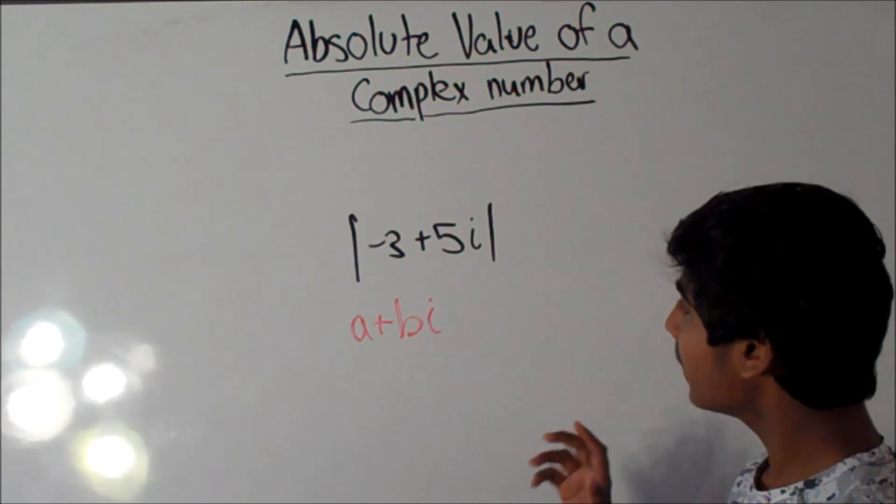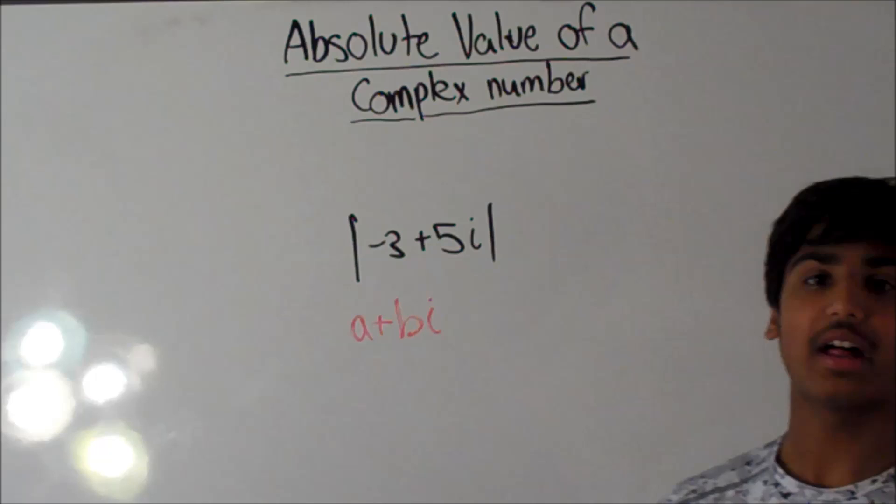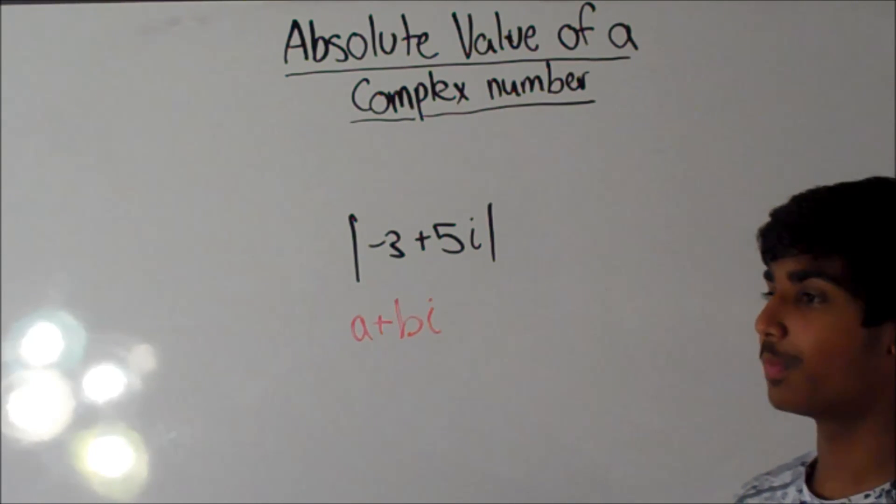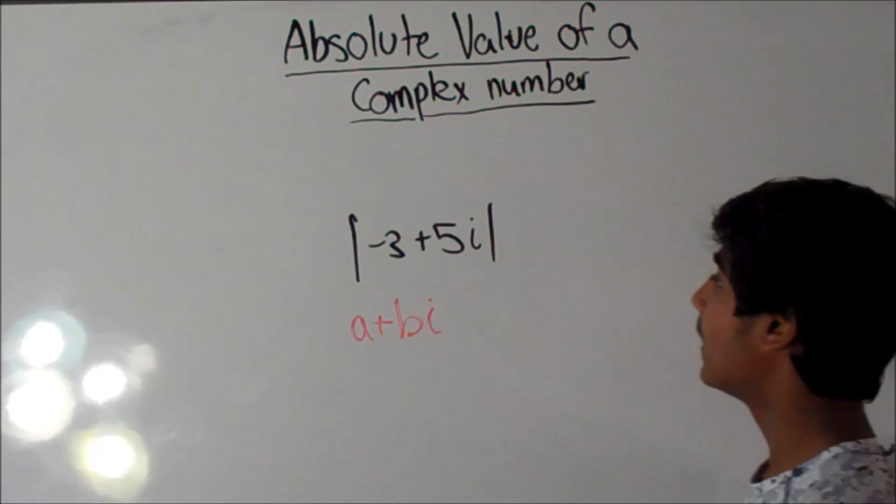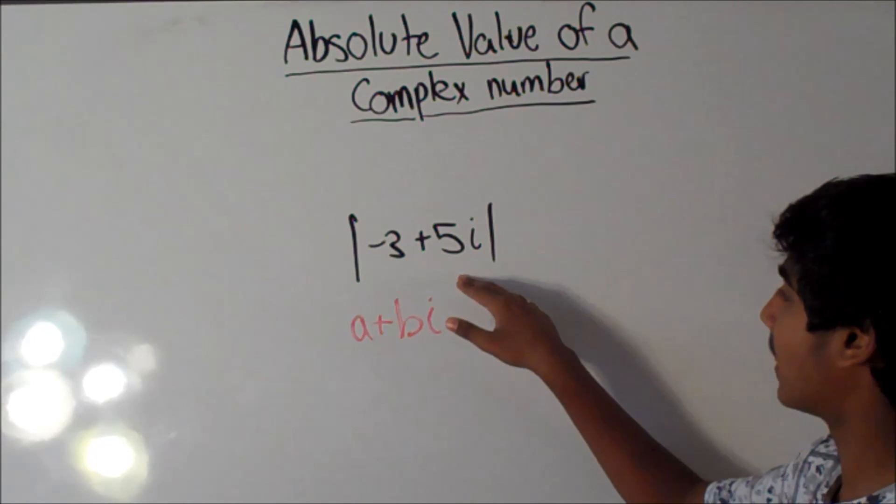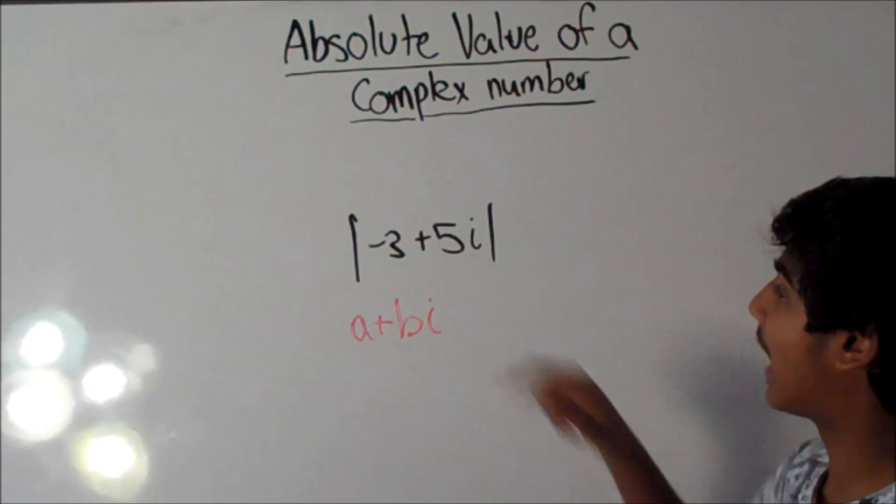So, what is absolute value? Absolute value is the distance between two points, between zero and this number. So, the distance between zero and this number is the absolute value.